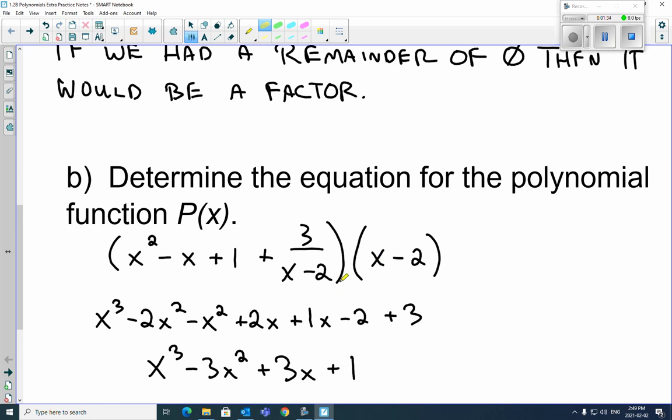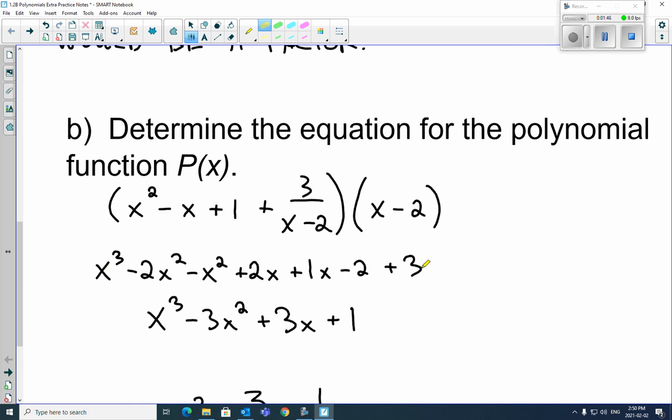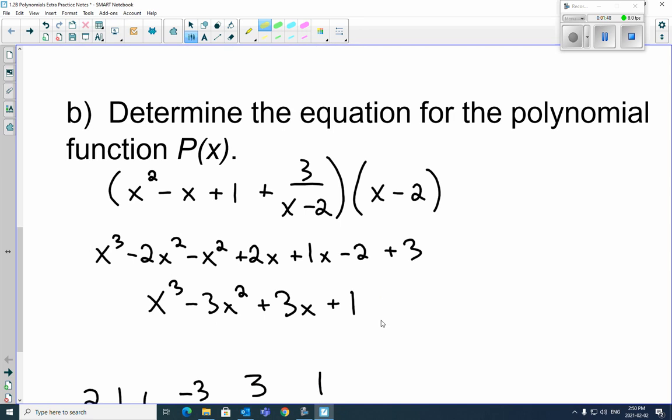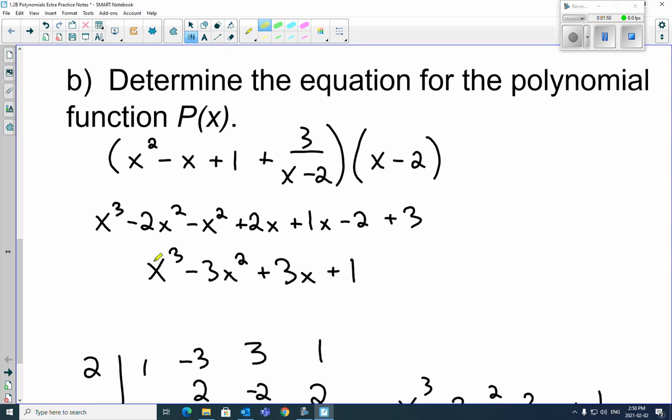Now, the nice part about it is if you look at the last part here, this 3 over x minus 2 times x minus 2. Oh, that's kind of cool. Those will just reduce down and you'll end up with a 3. So that's where we got our 3 from there. So you multiply everything out, then collect like terms, bang, and there we are. There's our polynomial there.